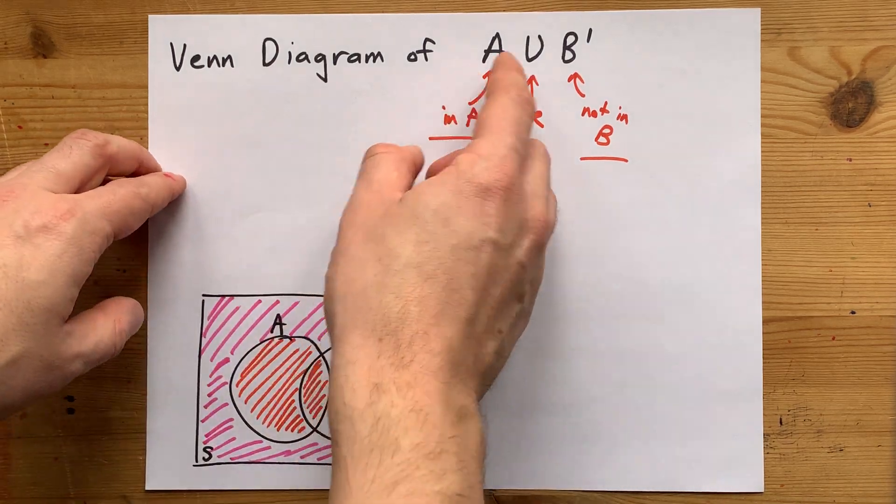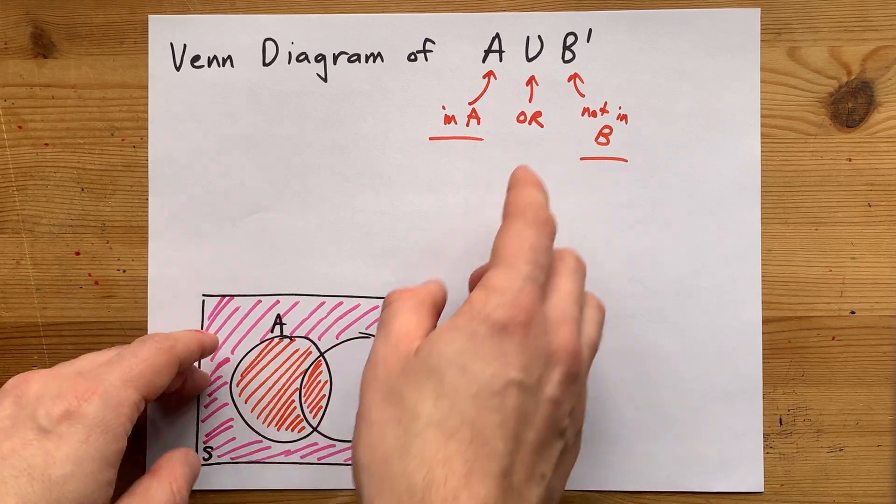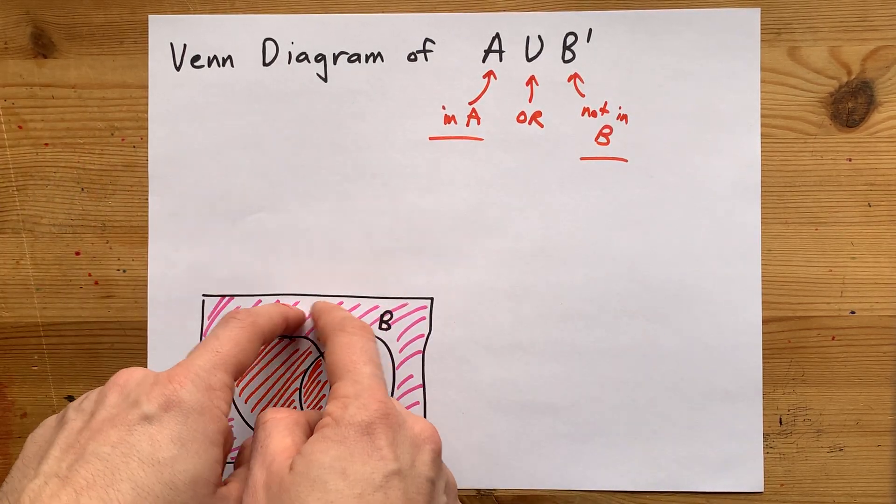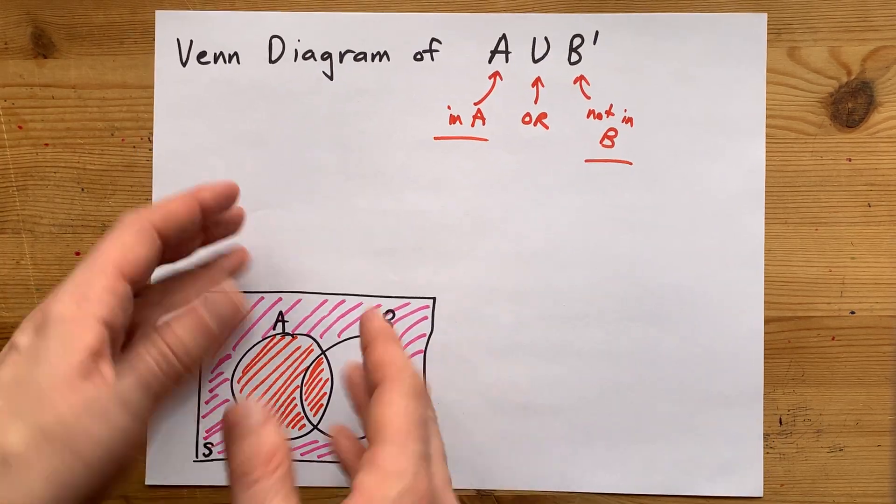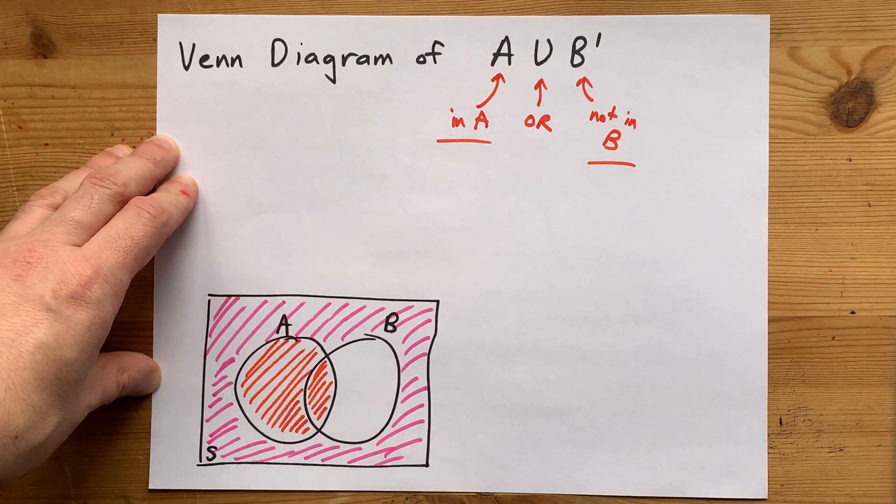That's it for the Venn diagram of A union, not B. It's literally everything inside A, or, and in addition to everything that is not inside of B. That's the way it goes. That's what unions are. Thanks for being with me, and best of luck.